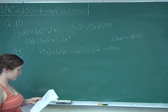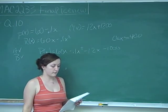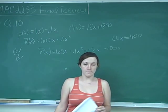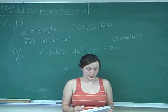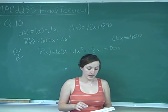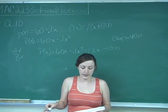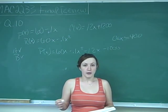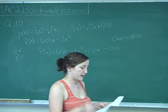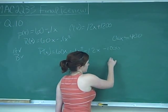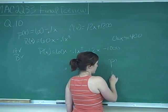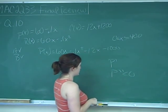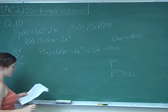Statement C says since the second derivative of the profit function P(X) at 100 is less than 0, marginal profit is decreasing at X = 100. If the second derivative is negative, the marginal profit is decreasing. The marginal profit is P prime, and the rate of change of that is P double prime. Since P double prime is less than 0, it is decreasing. So C is also true.